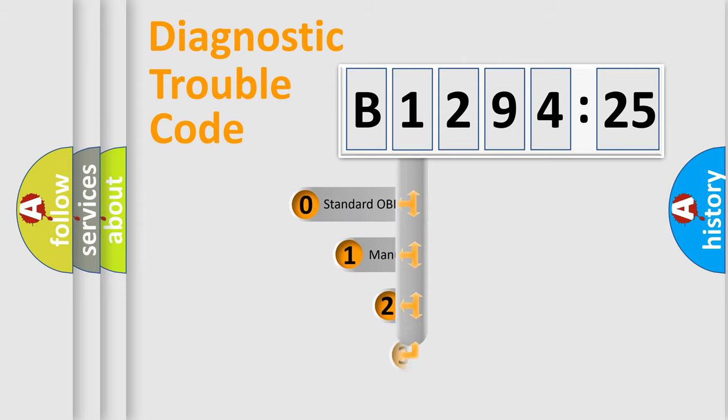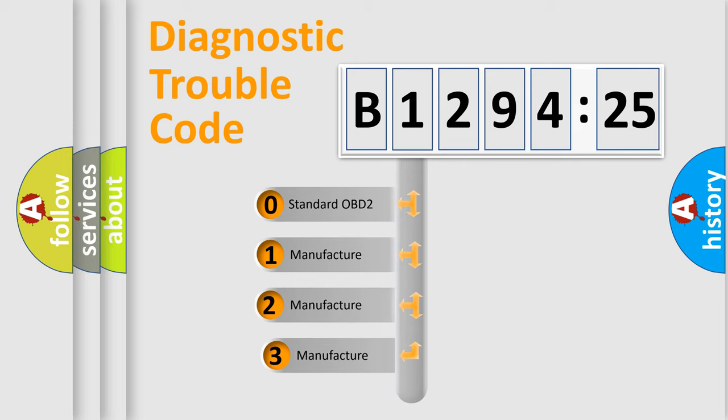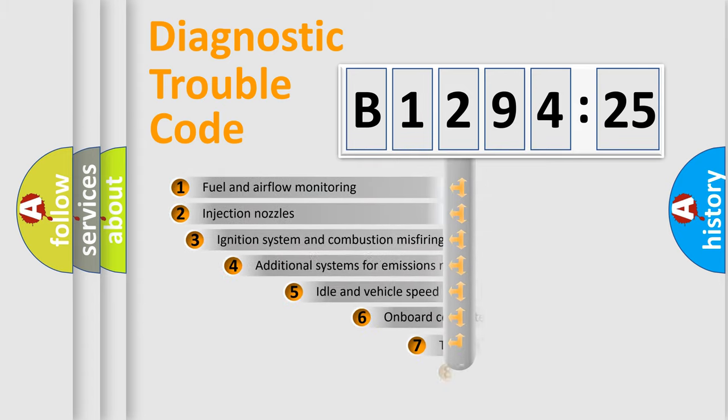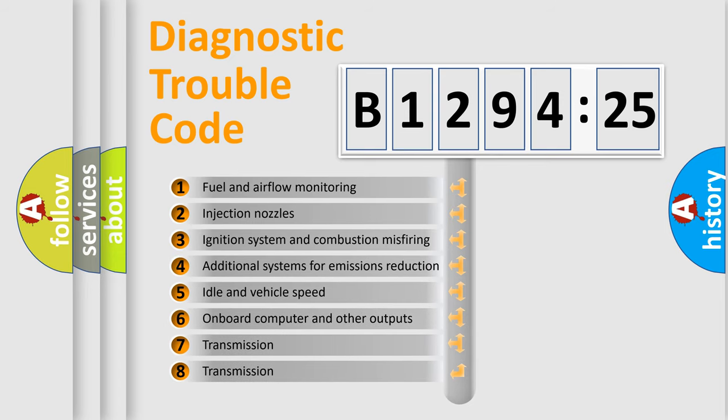Powertrain, Body, Chassis, Network. This distribution is defined in the first character code. If the second character is expressed as zero, it is a standardized error. In the case of numbers 1, 2, 3, it is a car-specific error.